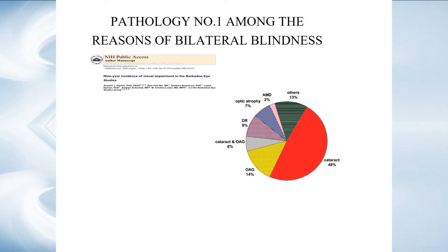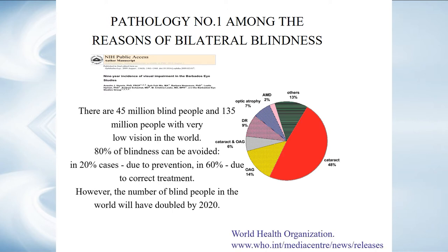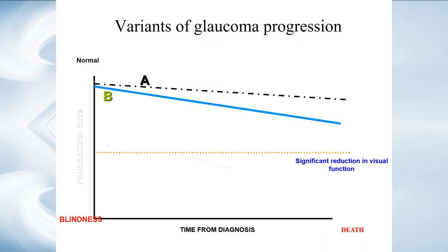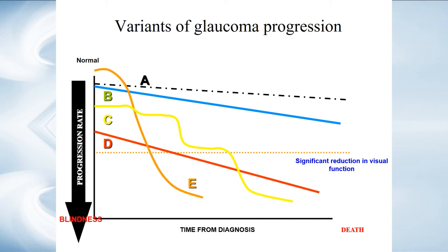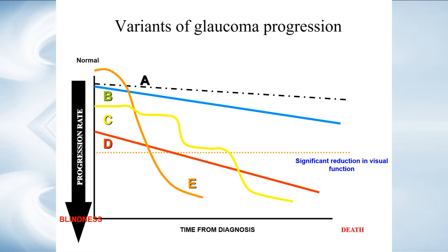It's a chronic degenerative disease, and as it is, it progresses. Although it's a slow process, it results in irreversible blindness. We can never know, when we see such a patient for the first time, what would be the scenario of this progression. Therefore, to provide the best individualized treatment, it's very important to identify the rate of progression in each individual case as early as possible.